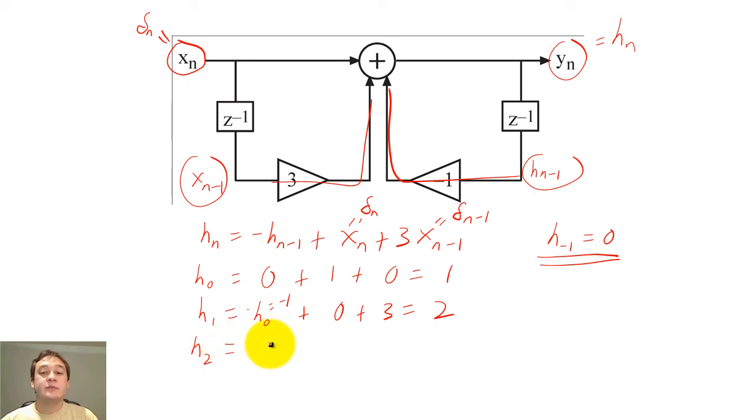Since both delta functions will be 0 for n greater than 1, h sub n will simply equal negative h sub n for n greater than 1.